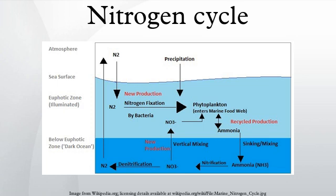Enzymes involved include GS/GOGAT (glutamine synthetase and glutamate synthase), GDH (glutamate dehydrogenase, which plays a minor role in ammonium assimilation), and enzymes important in amino acid catabolism.